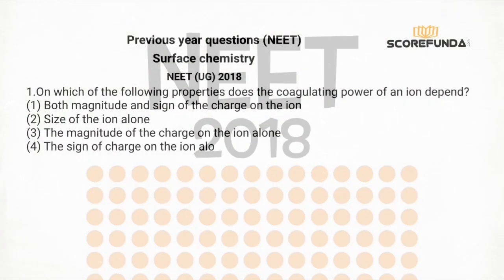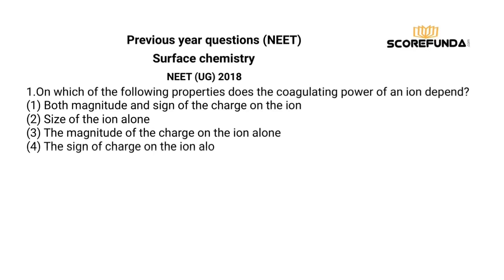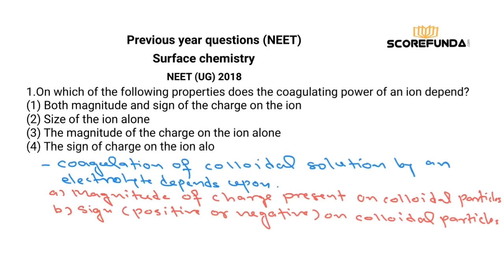Next, from NEET 2018: on which of the following properties does the coagulating power of an ion depend? We know that coagulation of a colloidal solution is achieved using an electrolyte. Coagulation depends on two things: the magnitude of the charge on the colloidal particle, which is related to the Hardy-Schulze rule.